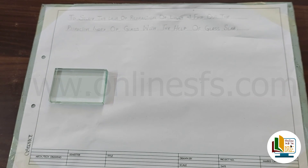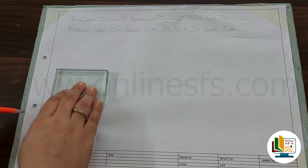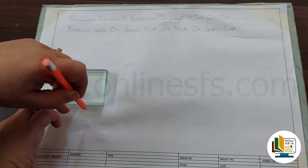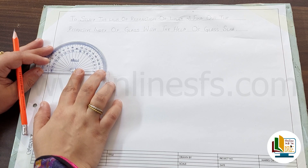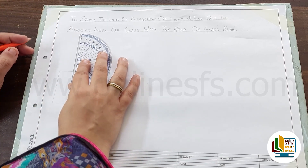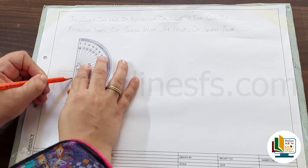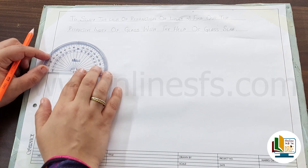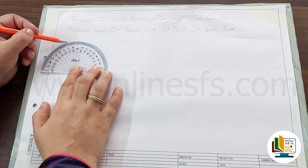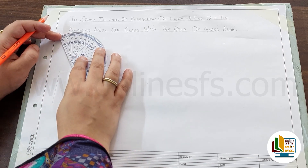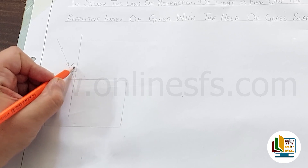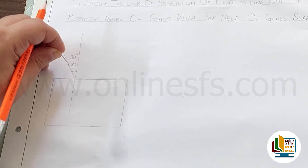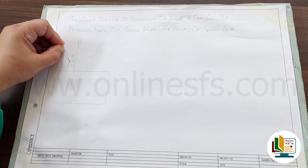Fix the drawing paper on the drawing board with the help of scotch tape or thumb pins. Sabse pehle hum paper par glass slab ki outline draw kar lenge. Iske baad hum point of incidence ke liye normal draw karenge with the help of a protractor. Ab hum 90 degree angle ko point of reference rakhte hue 30 degree ka angle draw kar lenge. This is the angle of incidence and the ray is the incident ray.